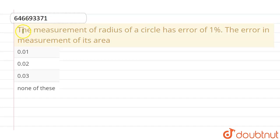Hello everyone, if we talk about this question, this given question is: the measurement of radius of a circle has error of 1%, the error in measurement of its area is.